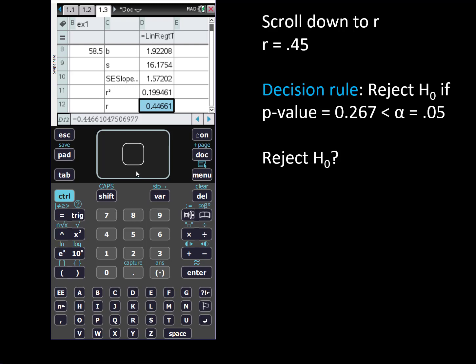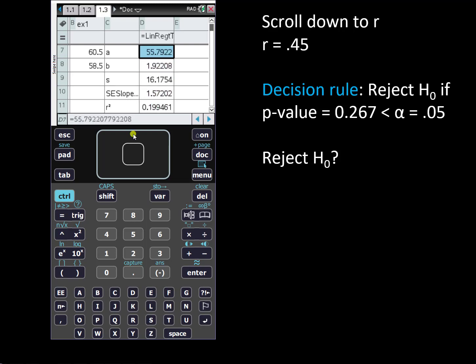And now we have enough information to conduct the hypothesis test with our first decision rule. Reject the null if p-value is less than alpha. Scrolling up we find that the p-value given is 0.267 and that is not less than the significance level of alpha equal 0.05, therefore we will fail to reject the null.